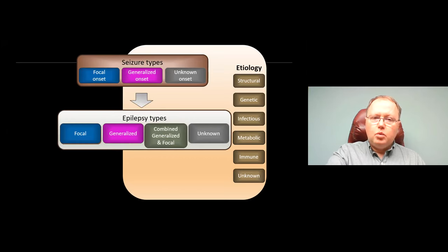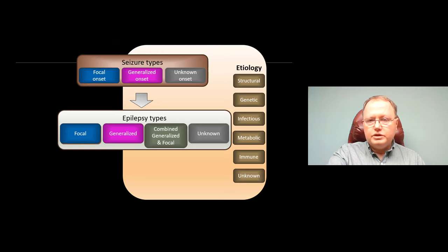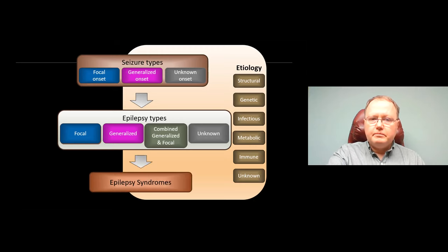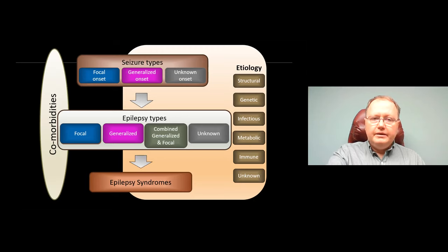This etiology goes into determining what the seizures look like clinically — focal, with shaking on one side; generalized, shaking on both sides; or starting on one side then spreading. All of this goes into making an epilepsy syndrome. Many epilepsy syndromes have comorbidities — for instance, Lennox-Gastaut is associated with intellectual disability, and several others have additional consequences.